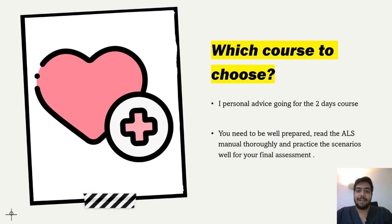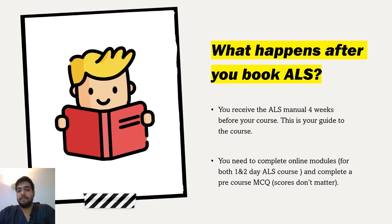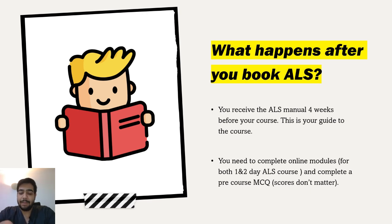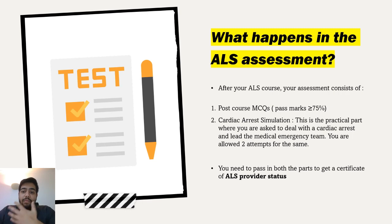What happens after you book your ALS? When you book, you will receive the ALS manual delivered to your address four weeks before the course. This manual is your guide and you need to read it thoroughly and be well prepared before the actual course teaching. You also need to complete online modules and a pre-course MCQ — the pre-course MCQ result doesn't matter; it's simply used to compare with your post-course MCQ to gauge how much the course improved your skills.